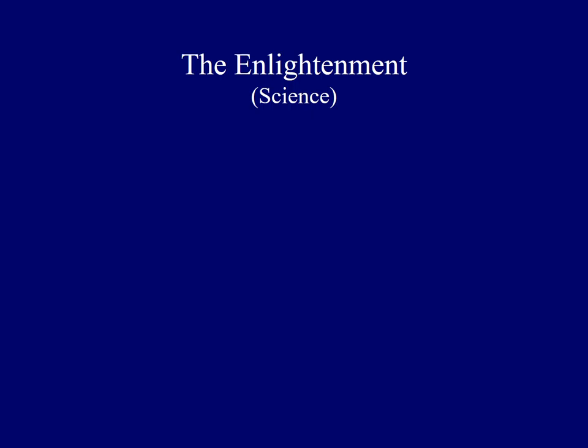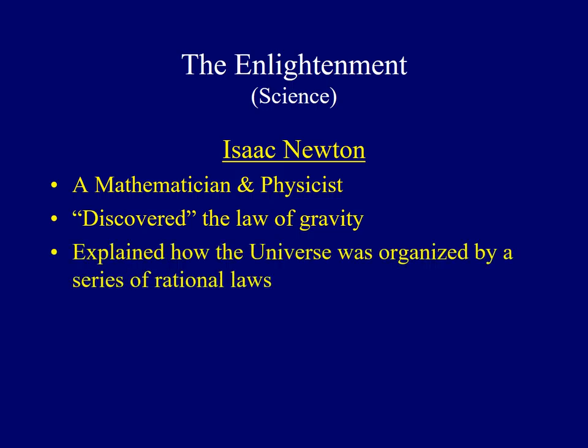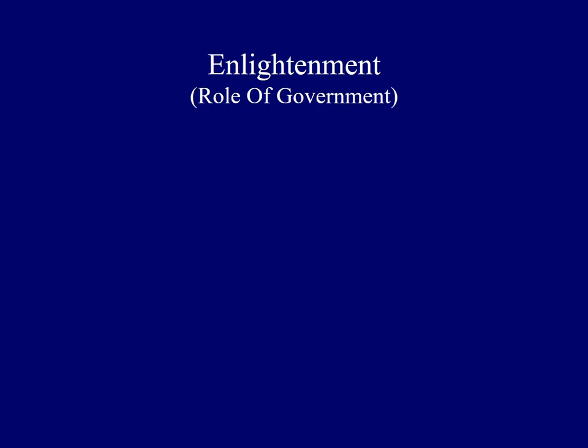While Newton was a forerunner in the area of science, John Locke influenced enlightened thought in both society and politics. One concept developed by John Locke was the compact theory, which outlined the proper role of the government. First, he argued all individuals have natural rights — including the right to life, liberty, and property. Secondly, to protect those rights, people establish a government with a limited set of powers. Finally, if the government somehow oversteps those powers, the people have the right — maybe even the duty — to revolt and overthrow a government which has exceeded its powers.